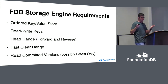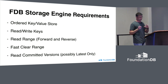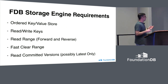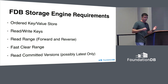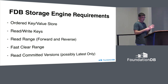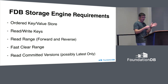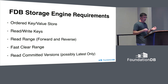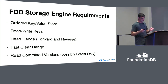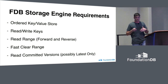FDB storage engine requirements: it has to be an ordered key-value store — you have to be able to read and write keys. You need to support range reads in forward and reverse order. An important one: you need to have fast range clears, meaning the range clear operation has to take immediate effect and not significantly harm subsequent read or write latency. It can have background work that happens later. But the clear range can't stop or stall the speed at which you can apply mutations to the storage engine. You also need to be able to read data at a committed version. What we have today only allows reading the latest committed version, but what we want for future storage engines is to be able to read any committed version within some configured interval.